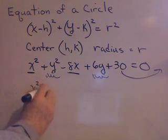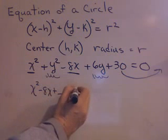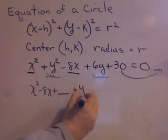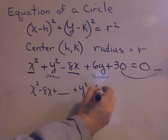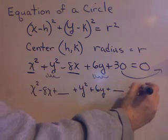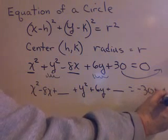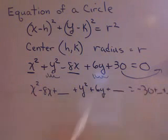So, regrouping, I get x squared minus 8x plus a space, because I'm going to be doing complete the square, plus y squared plus 6y plus a space equals negative 30 plus a space plus another space. I like to put the spaces. It reminds me that I have to add things to both sides of the equation to keep the equal sign equal.